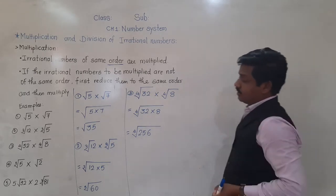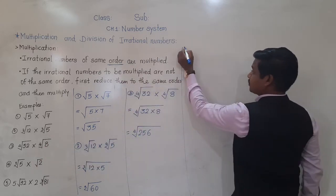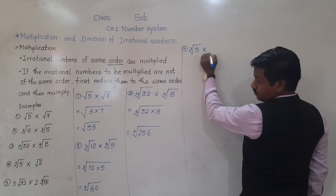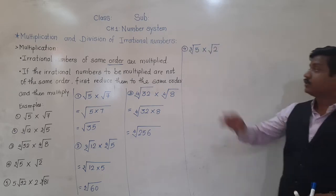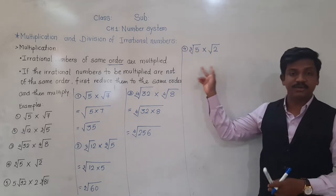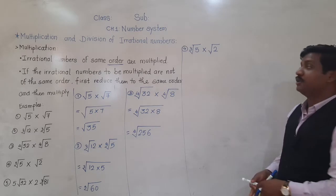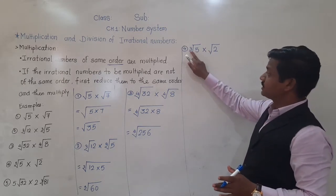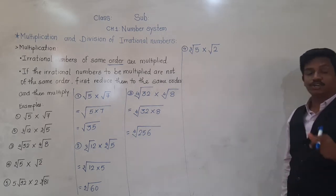Example number 4: cube root of 5 into square root of 2. Can we multiply these irrational numbers directly? No, because the orders are not same. Order of this irrational number is 3, and order of this irrational number is 2. So directly we cannot multiply it.